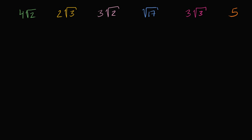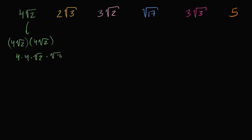So I'm just going to square each of these. If I take four square roots of two to the second power, that's four square roots of two times four square roots of two. Changing the order of multiplication, that's four times four, times the square root of two times the square root of two. Four times four is 16, and square root of two times square root of two is two, so it's 16 times two, which equals 32.